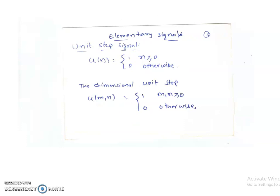The next elementary signal is the unit step signal. For the one-dimensional case, u(n) equals 1 for n greater than or equal to 0, and 0 otherwise. For the two-dimensional case, we have a separable function: u(m, n) equals u(m) multiplied with u(n), which results in 1 if m and n are both greater than or equal to 0, and 0 otherwise.